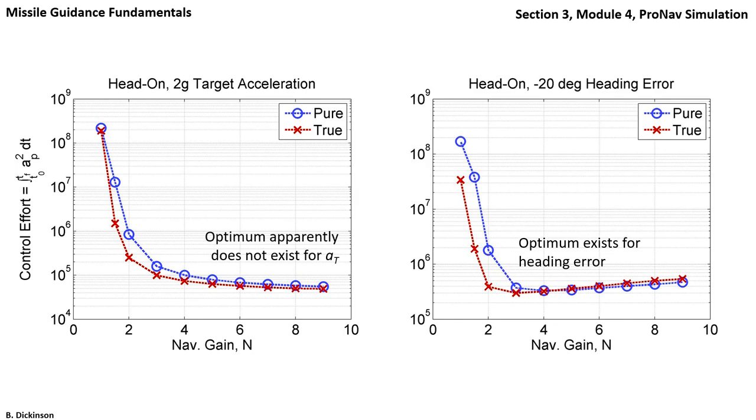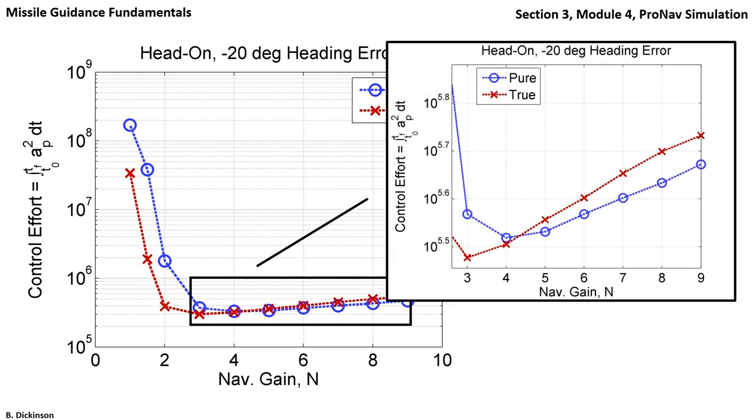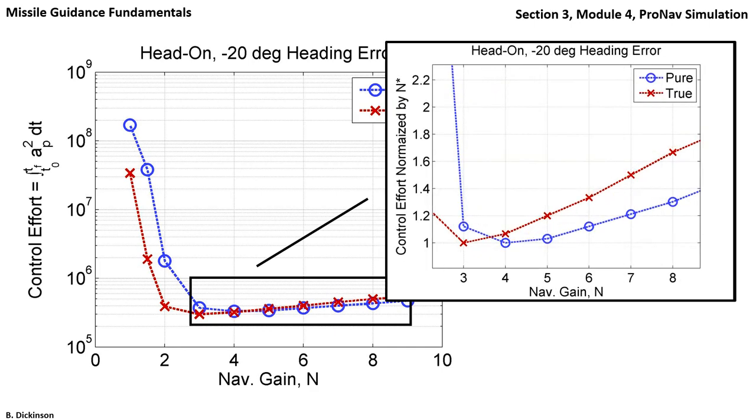Let's look at these cases in a little more detail, starting with the heading error case. We want to understand how significant these optimal values of N are. Notice that after a navigation gain of 3, there is a very shallow slope in this curve as N increases. So is the amount of control effort expended for larger N actually significant? Zooming in, we can clearly see now the optimal values on the pure and true pronav lines. Now plotting this on a linear scale and normalizing each curve by its respective optimal value of N, we can see the factor increase beyond the optimal value. If N is between 3 and 5, the control effort is within 20% of its optimal value for both pure and true pronav.